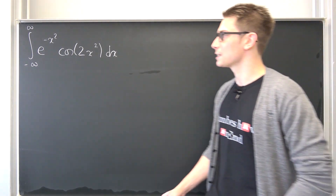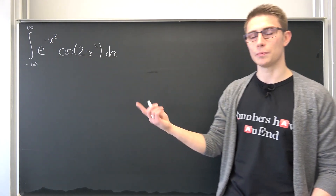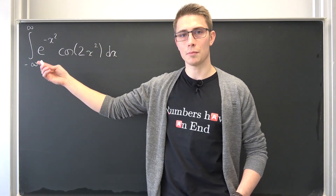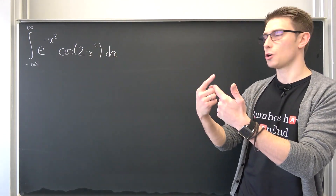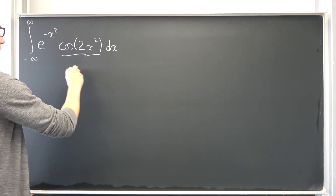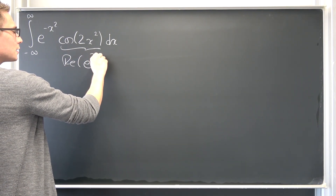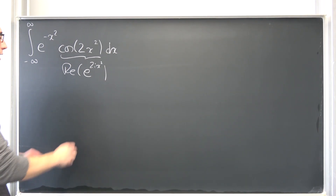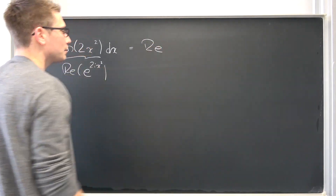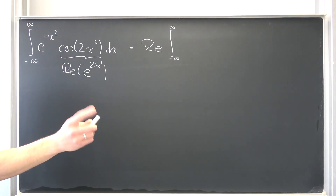So when I first evaluated this, the first thing that came to my mind is that the cosine is nothing other than the real part of the complex exponential function. And since we are in the Banach lattice of the real numbers, we can actually interchange the real part operator and our integral. So overall our cosine of 2x squared is nothing other than the real part of our e to the 2i x squared.